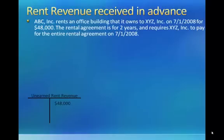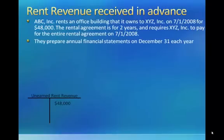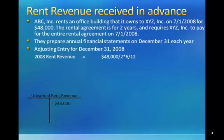They calculate the amount that they've earned by taking the rental amount and dividing it by the term — in this case $48,000 divided by two years — to determine the annual rent revenue of $24,000. But since they want to determine how much rent revenue was earned in the current year, they need to multiply that by 6 over 12, because it's only half a year's worth of rent that they would have earned, since this rental agreement began on July 1, 2008. Consequently, the adjusting entry on December 31 would be a debit to unearned rent revenue of $12,000 — half of the $24,000 annual — and a credit to rent revenue of $12,000.